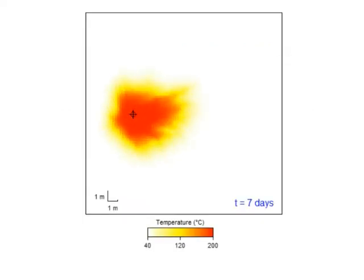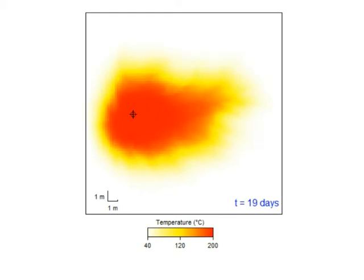The first animation shows a color map of temperature everywhere in the domain. The hot water spreads outward from the injection well and reaches much of the formation in just 20 days.